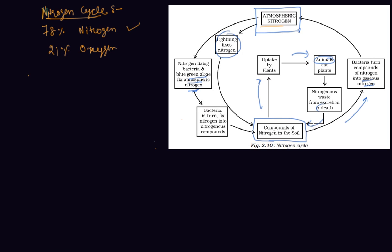This is called the Nitrogen Cycle, and it is very important from the exam point of view. It might come into the exam where you have to draw the diagram of the Nitrogen Cycle and describe its functioning. You would write that atmospheric Nitrogen cannot be taken directly by plants and animals — it is fixed by nitrogen-fixing bacteria and blue-green algae, which convert it into compounds of Nitrogen in the soil.